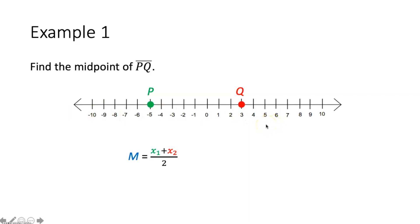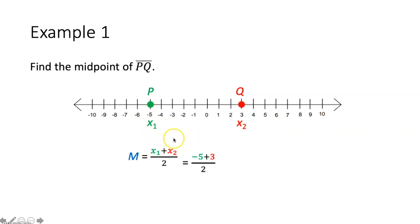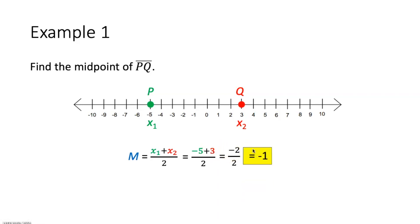So what is our x sub 1 and x sub 2? It doesn't matter which one you pick — you'll get the same answer either way. But since I've color coordinated this, we'll say P is going to be our x sub 1 at negative 5, and Q at 3 is going to be our x sub 2. We plug those in: negative 5 plus 3 gives us negative 2, and then negative 2 divided by 2 gives you negative 1. That means negative 1 is the midpoint between points P and Q.